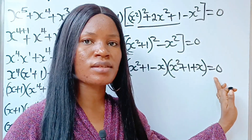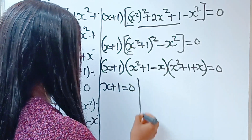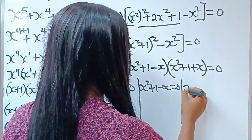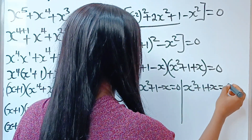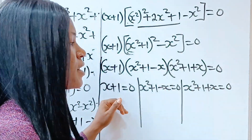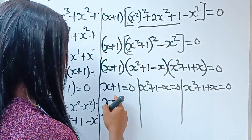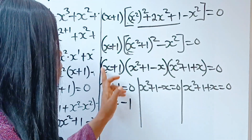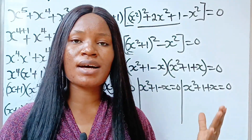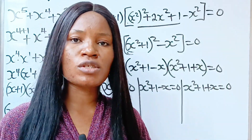We have three expressions equated to 0, and that simply means x plus 1 is equal to 0, x squared plus 1 minus x is equal to 0, or x squared plus 1 plus x is equal to 0. Now, since we have these three things equated to 0, let's start solving from the left-hand side. We have that x here is equal to minus 1, because plus 1 will cross to become minus 1. Then, when you come to the others, since we are told that x is real, let's first check their discriminants.